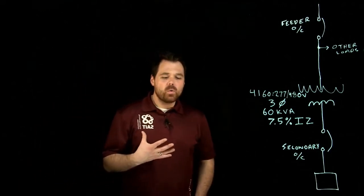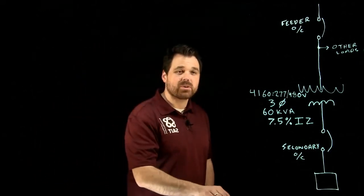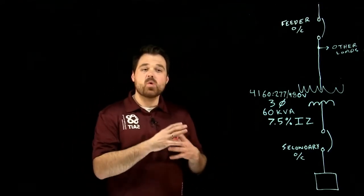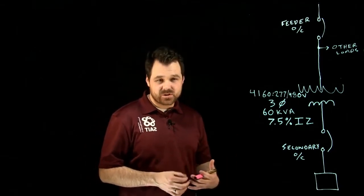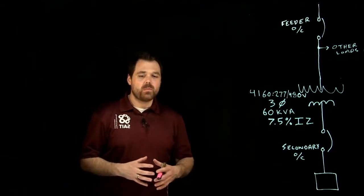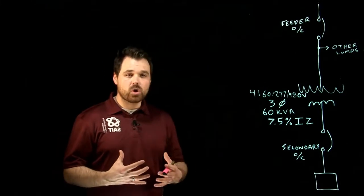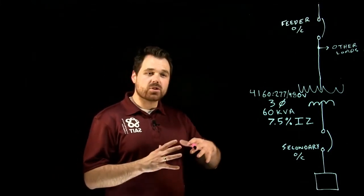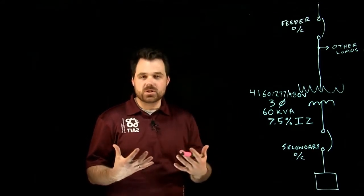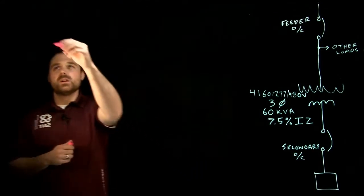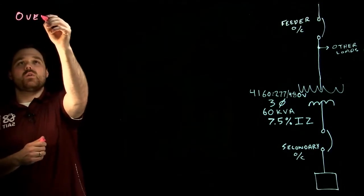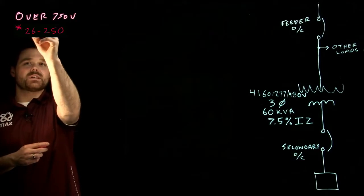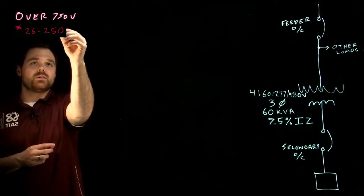Hi. We're here to talk about overcurrent protection for a transformer. More specifically, we're going to talk about overcurrent protection for a transformer over 750 volts. When we're going into the Canadian Electrical Code Section 26, it's important that we're dealing with the right rule to make sure we're applying the right process to a transformer. With a transformer over 750 volts, we are dealing with 26,252.